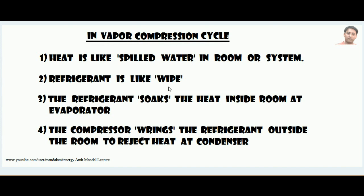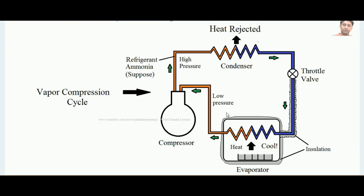The evaporator is the component of the refrigeration cycle inside the room where the refrigerant absorbs the heat, just as the wipe absorbs the water. When the heat is absorbed by the refrigerant, it is squeezed outside the room, and that squeezing or wringing is done by the compressor. Looking at the real schematic diagram — this is our room or system from where we want to remove the heat. The refrigerant passes through a tube and absorbs the heat from that system.